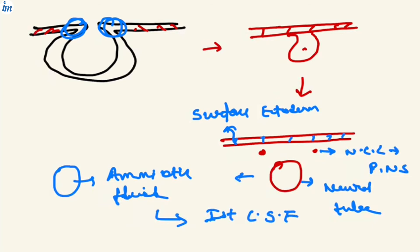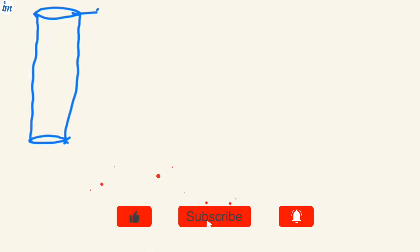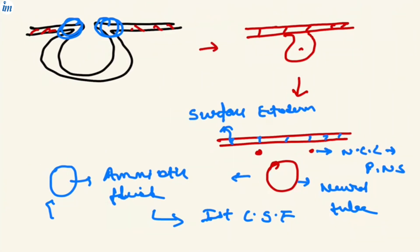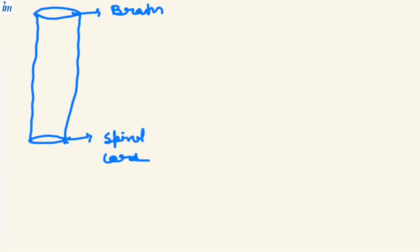This neural tube is going to form the brain and spinal cord. But before the neural tube gets formed from the neural groove, on day 20 of the embryological process, the cervical region has to get fused to the occipital region to form the first pair of somites, and then the neural tube is formed.